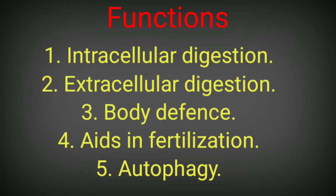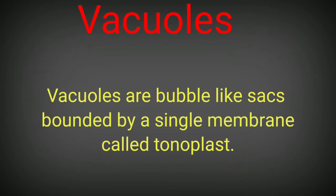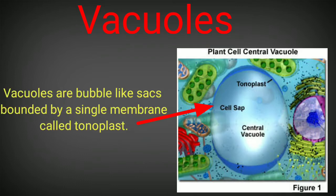Now let's come to another term closely associated with the lysosome - the vacuoles. Vacuoles are bubble-like sacs bounded by a single membrane called the tonoplast. They are similar to lysosomes in that they are also bounded by a single unit membrane called the tonoplast, and they appear in the form of a sac or vesicle. They are also formed from the Golgi apparatus.